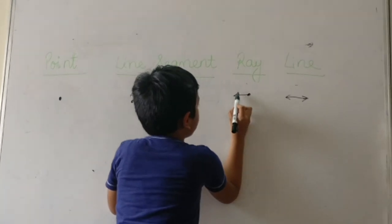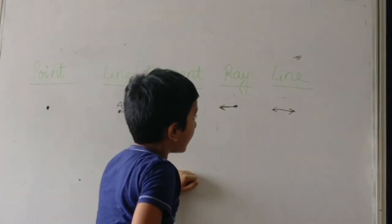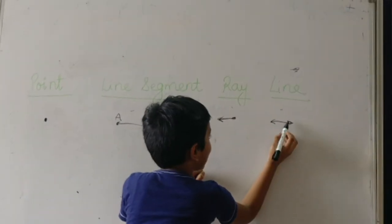Ray means one side arrow and another side dot. And line means both the sides arrow.